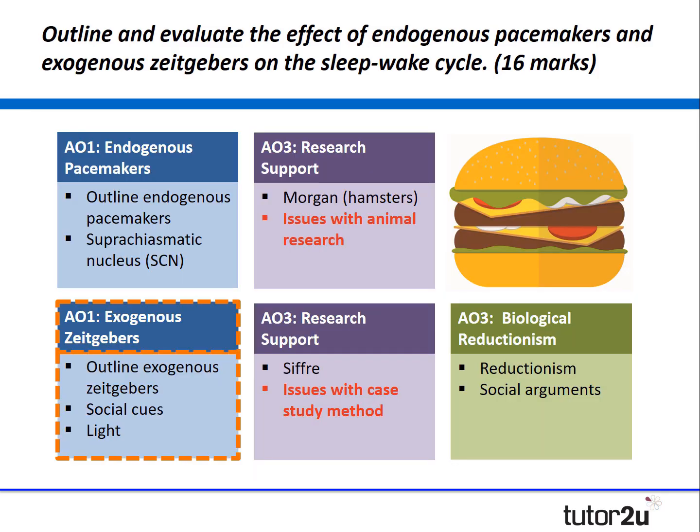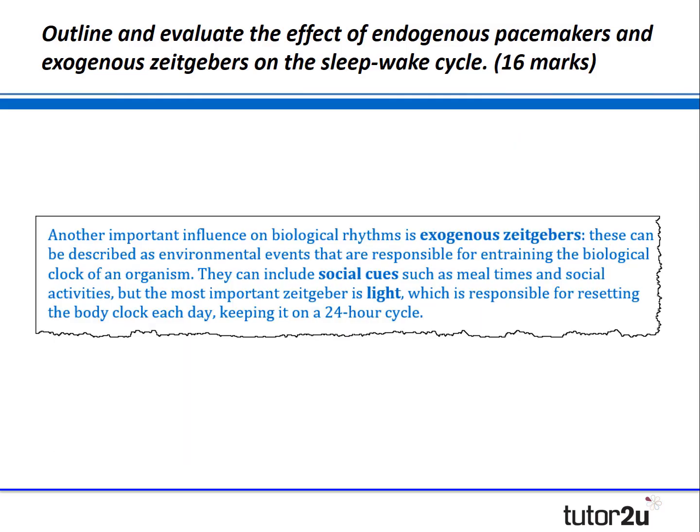Now let's look at what we would do for the exogenous zeitgebers section — the second half of our outline. Another important influence on biological rhythms is exogenous zeitgebers, which can be described as environmental events responsible for entraining the biological clock of an organism, in this case humans. These include social cues such as mealtimes and social activities, but the most important zeitgeber is light, which resets the biological clock each day keeping it on a 24-hour cycle.